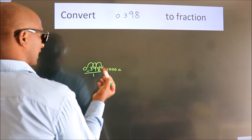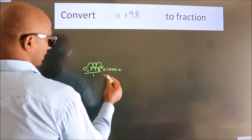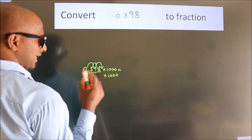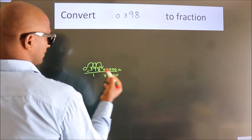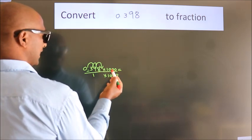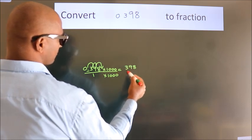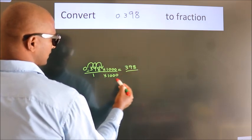Whatever number you are multiplying in the numerator, in the denominator also do the same. Next, 0.398 into 1000 equals 398. 1 into 1000 equals 1000.